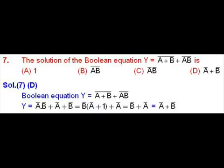Question number 7: The solution of the Boolean equation y equals a plus b whole bar plus ab bar is: The Boolean equation y equals a plus b whole bar plus ab bar, that is equals to a bar dot b bar plus a bar plus b bar.